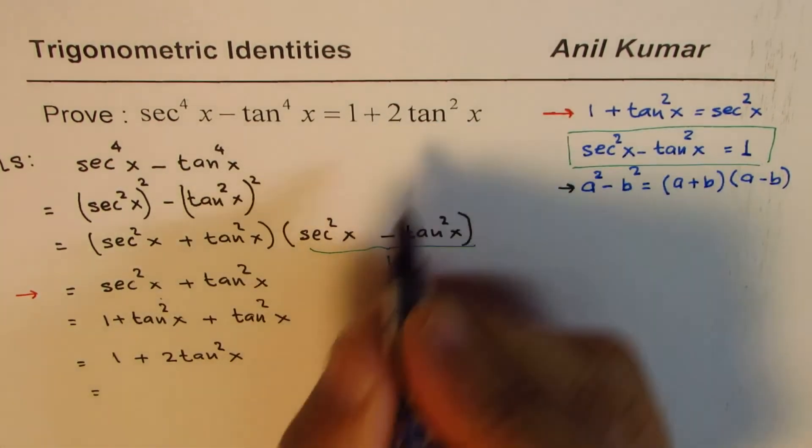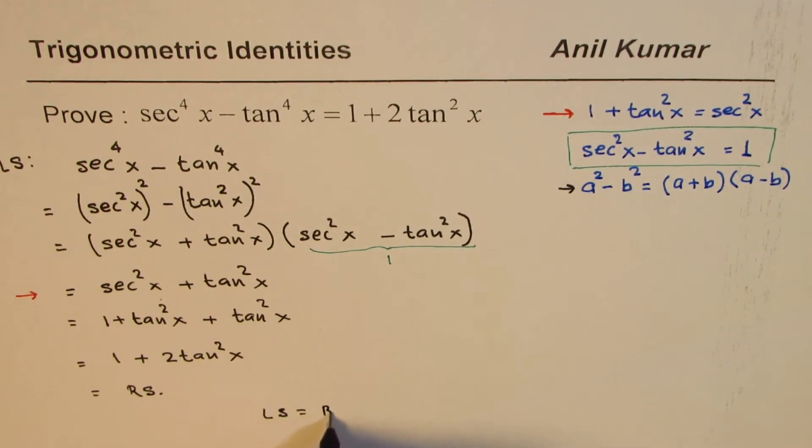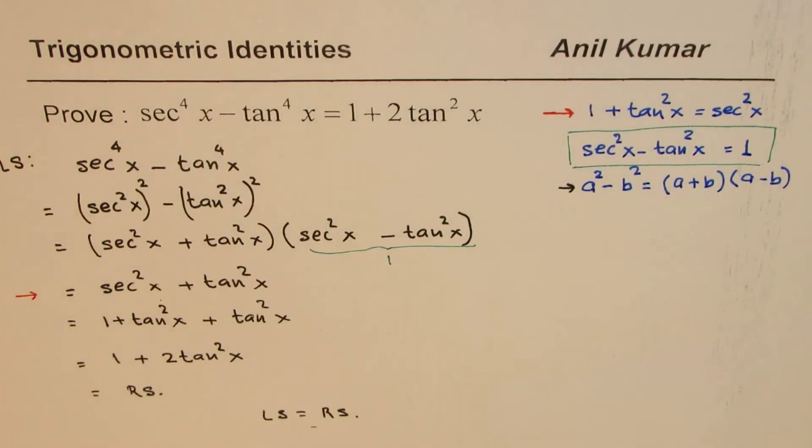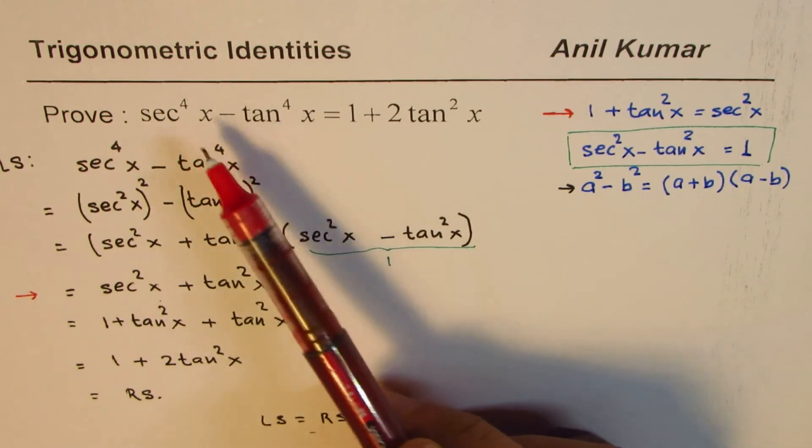Which is same as the right side. So that means left side equals right side and that is how we can prove the given identity. Let's look into this once again. We had difference of powers of four.